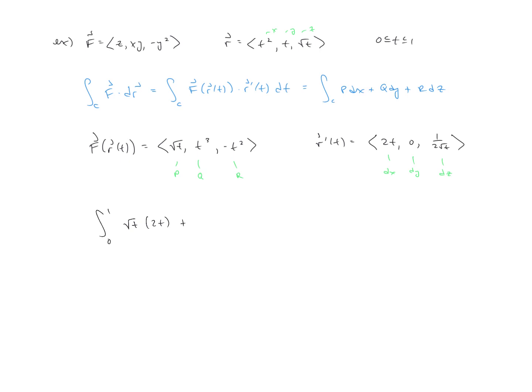Then we'll have plus, we'll have our t³ times our 0, so that's going to be our Q dy. And then finally, plus the R value, which is negative t², dz, which is 1/(2√t). And so that would be now your setup in terms of what we have up here in blue and how it all is related.